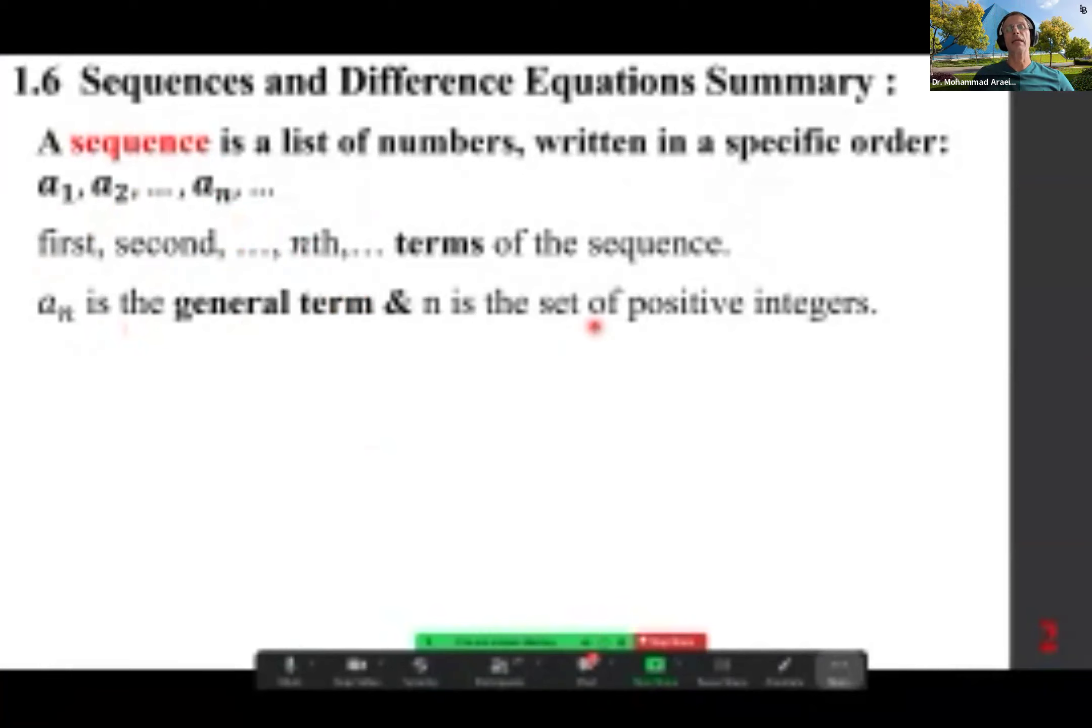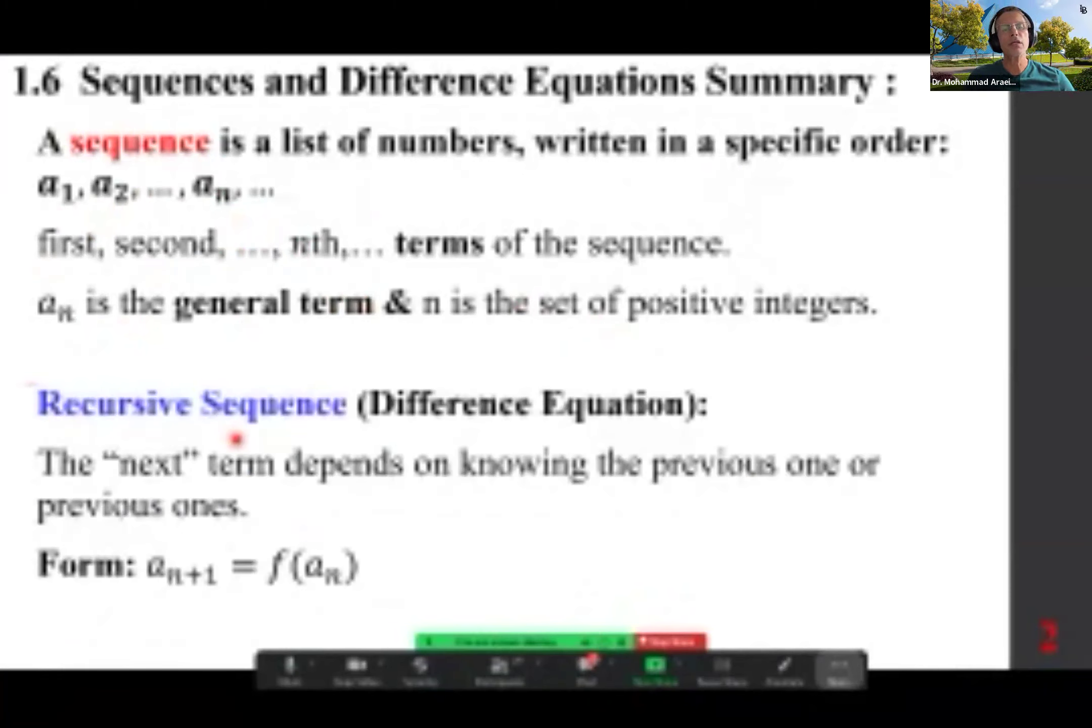A sub n is the general term and n is the set of positive integers. A recursive sequence, also known as a Difference Equation. The next term depends on knowing the previous one or previous ones, a sub n plus 1 equals f of a sub n.